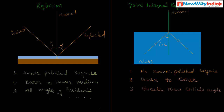The third difference: in case of reflection, reflection can take place for all angles of incidence — that means if you change the incident angle, reflection will still take place for all angles. In case of total internal reflection, it can only take place when the angle of incidence is greater than the critical angle.